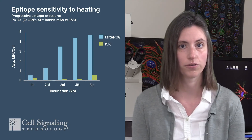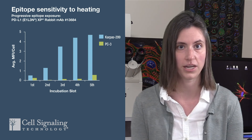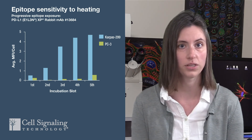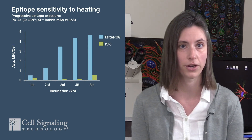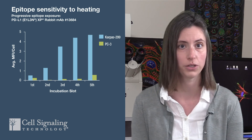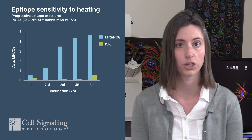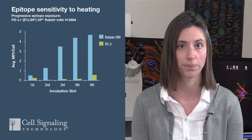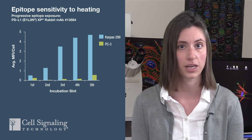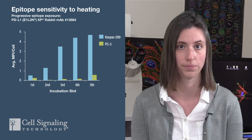This graph shows the fluorescence intensity of PD-L1 staining in positive and negative cell pellets. The PD-L1 staining was much brighter in the last slots compared to the first two, possibly due to the epitope becoming increasingly exposed during each round of heating. This is an example of an antibody that actually benefits from being stained in a later slot.